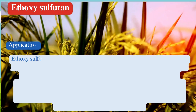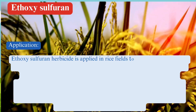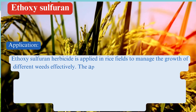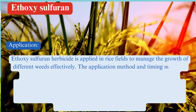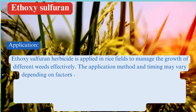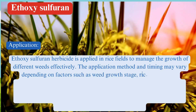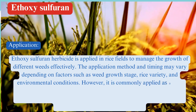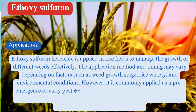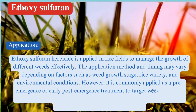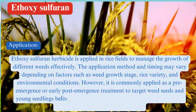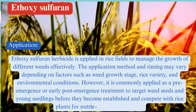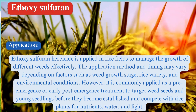Uses. Ethoxysulfuron herbicide is applied in rice fields to manage the growth of different weeds effectively. The application method and timing may vary depending on factors such as weed growth stage, rice variety, and environmental conditions. However, it is commonly applied as a pre-emergence or early post-emergence treatment to target weed seeds and young seedlings before they become established and compete with rice plants for nutrients, water, and light.